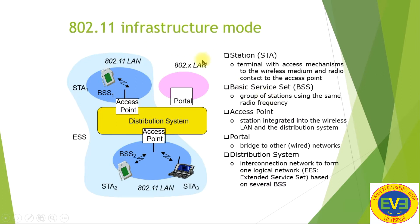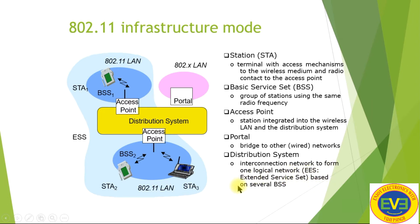In 802.11 infrastructure mode, a station is a terminal with access mechanisms to the wireless medium and radio contact to the access point. A Basic Service Set (BSS) is a group of stations using the same radio frequency. An access point is a station integrated into the wireless LAN in the distribution system. A portal bridges to other wired networks. The distribution system is an interconnection network forming a logical network — the Extended Service Set (ESS), based on several BSSs.